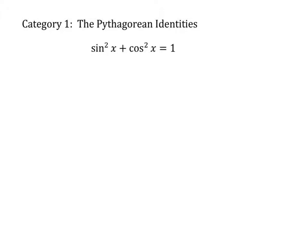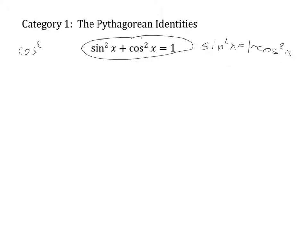The first category of identity we're going to be working with are the Pythagorean identities. These come from the idea that they can be found and justified using a triangle and the Pythagorean theorem. There are nine of these total, but the one I have clearly memorized is that sine squared x plus cosine squared x equals one. This could be rewritten as sine squared x equals one minus cosine squared x, or cosine squared x equals one minus sine squared x.